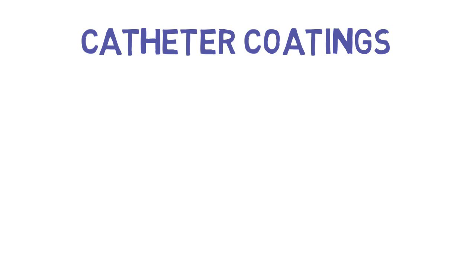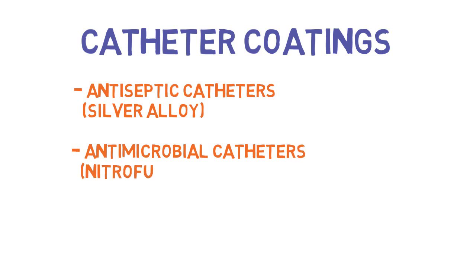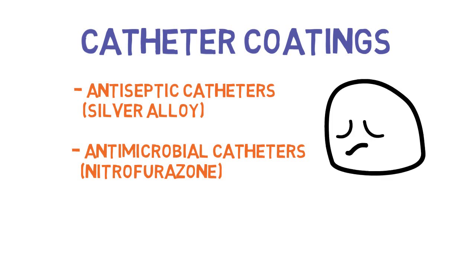Catheter coatings. Over the years, many people have tried to develop catheter coatings that will decrease the risk of catheter-related urinary tract infections. The two main types are antiseptic catheters impregnated with silver alloy, and antimicrobial catheters impregnated with antibiotics such as nitrofurazone. Despite many attempts, there is not good evidence to support the use of these special coatings, and patients often report that these catheters are more uncomfortable than traditional uncoated urinary catheters.